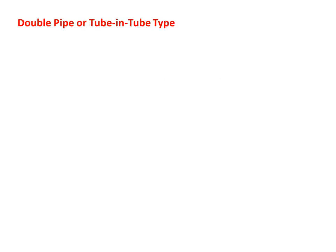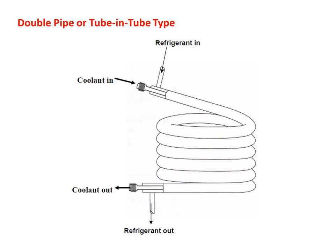In the double pipe or tube-in-tube type condenser, there are two concentric tubes. The inner tube is for the coolant and the outer concentric tube is for the refrigerant. The coolant enters from the internal tube and moves out from the other side. The outer tube is for the refrigerant — this is the refrigerant inlet, and after heat rejection the refrigerant exits from the other direction.